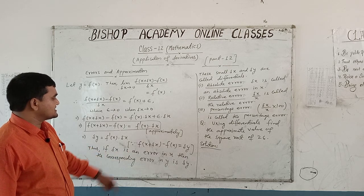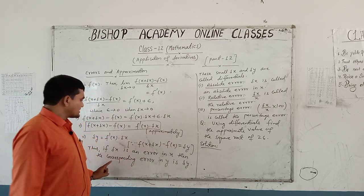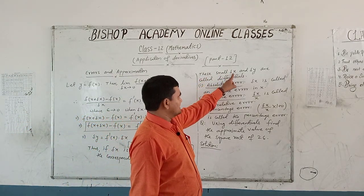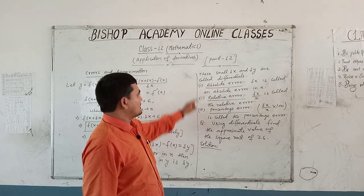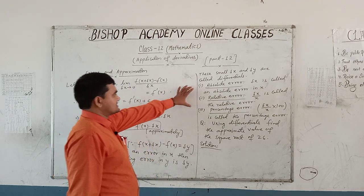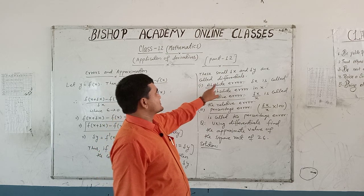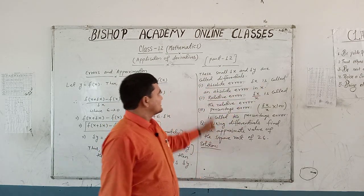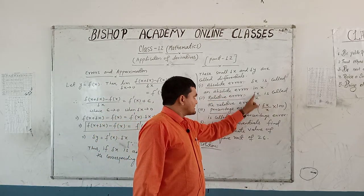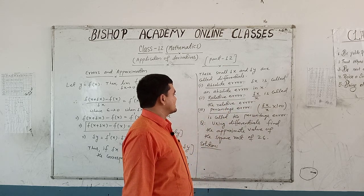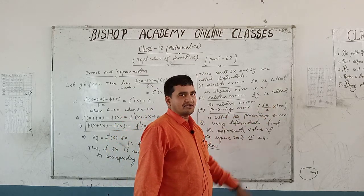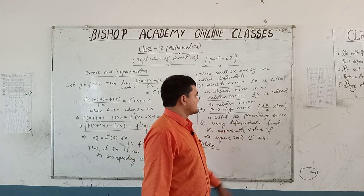Thus, if delta x and delta y are small, they are called differentials. The first point is absolute error: delta x is called the absolute error in x. Second is relative error: delta x upon x is called the relative error. Third is percentage error: delta x upon x multiplied by 100 is called the percentage error.